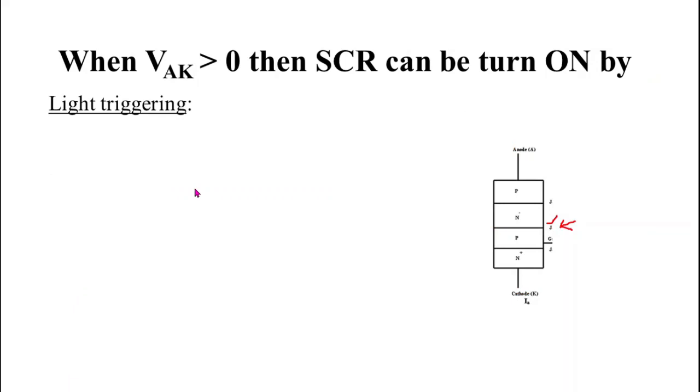Now next method is light triggering. If VAK, that is anode to cathode voltage, is greater than zero and it is less than forward break over voltage VBO, then outer two junctions J1 and J3 are forward bias while junction J2 is reverse bias. When photons fall on reverse bias junction J2, then electrons and holes are generated which neutralize the stored charges across the junction, so depletion region width decreases and it starts conducting.